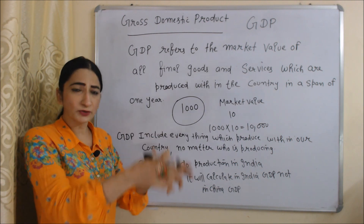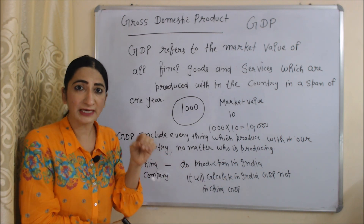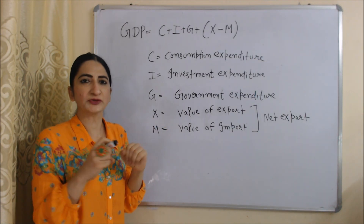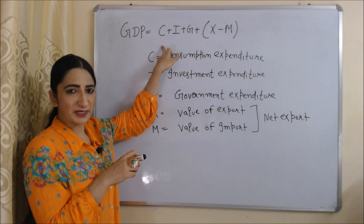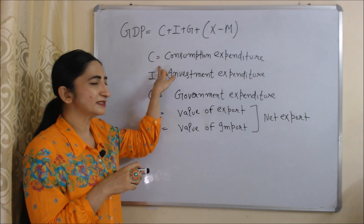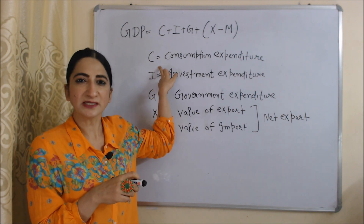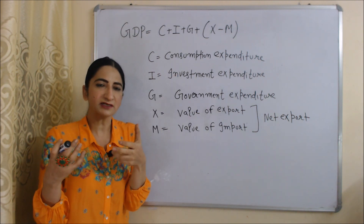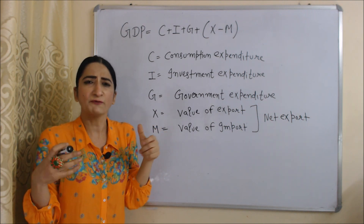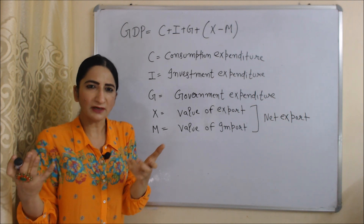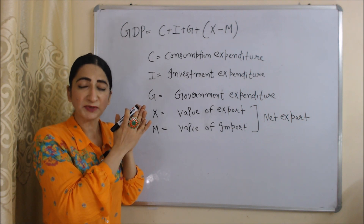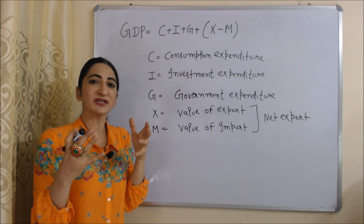Now we will see the formula to calculate GDP. GDP = C + I + G + (X - M). Here C is consumption expenditure — expenditure done by consumers on final goods and services produced within our country, for example cooler, AC, mobile, etc. I is investment expenditure — expenditure on investment goods, for example tools, equipment, machineries, etc.